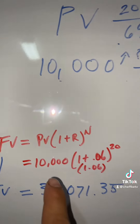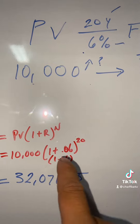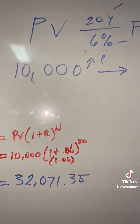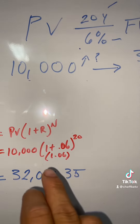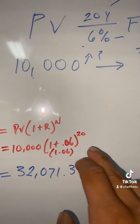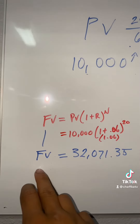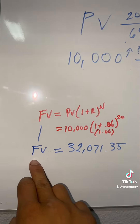If you know any basic math, plug it in. You got the $10,000 times one plus 6%, and one plus 6% is 1.06, to the power of 20 years. Then you take your future value.